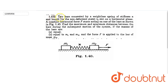Hello friends, I will ask you a question. Two bars connected by a weightless spring of stiffness K and length L0 are resting on a horizontal plane. When a constant horizontal force F starts acting on one of the bars, as shown in figure 1.40, we will find the maximum and minimum distance between the bars during the subsequent motion.